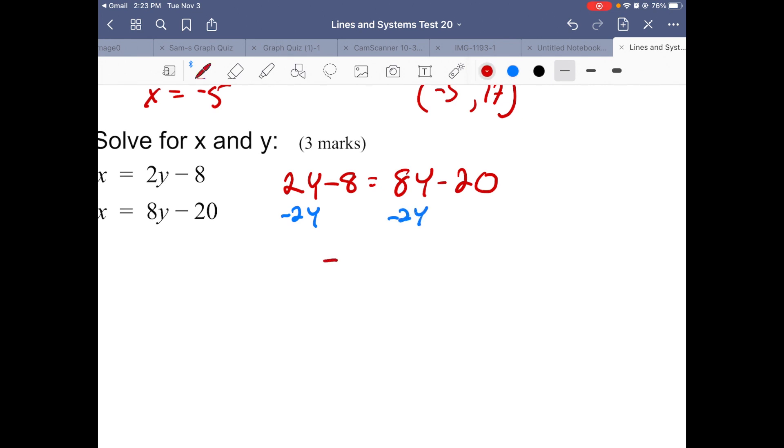For your y's, we end up with -8 = 6y - 20. I want to get the 6y all alone, so to do that, I'm going to get rid of the -20. I'm going to add 20 to both sides, and that gives me 12 = 6y.